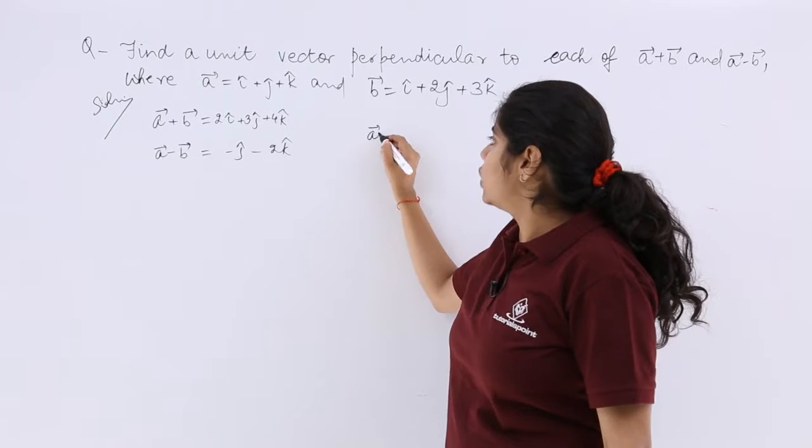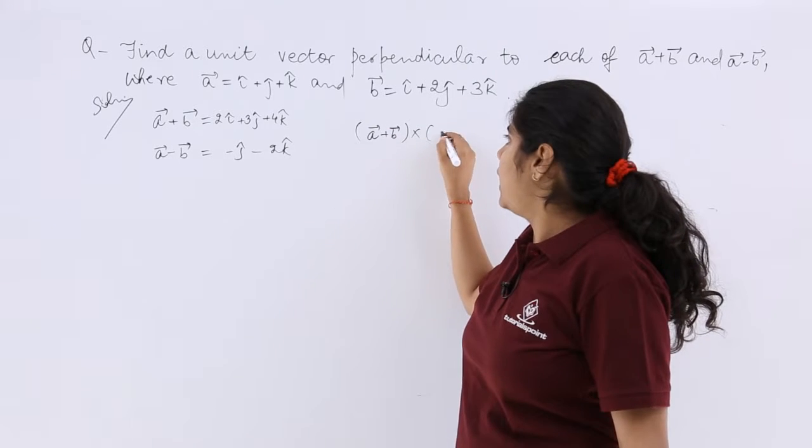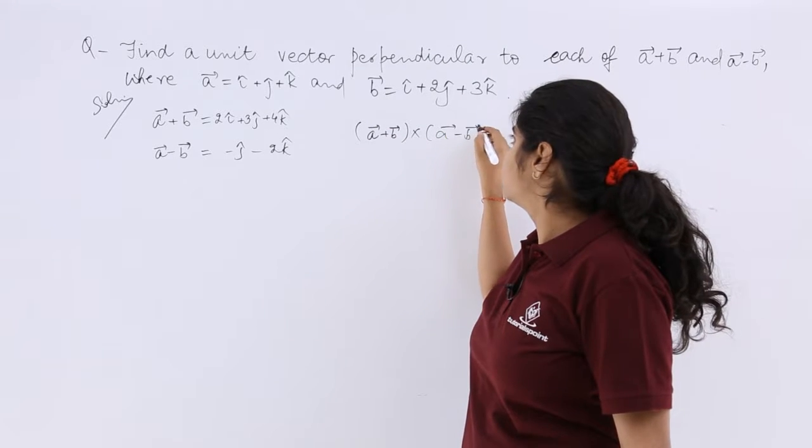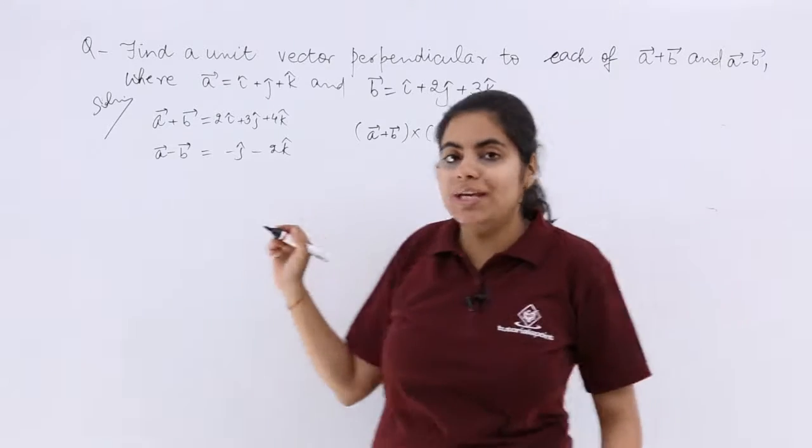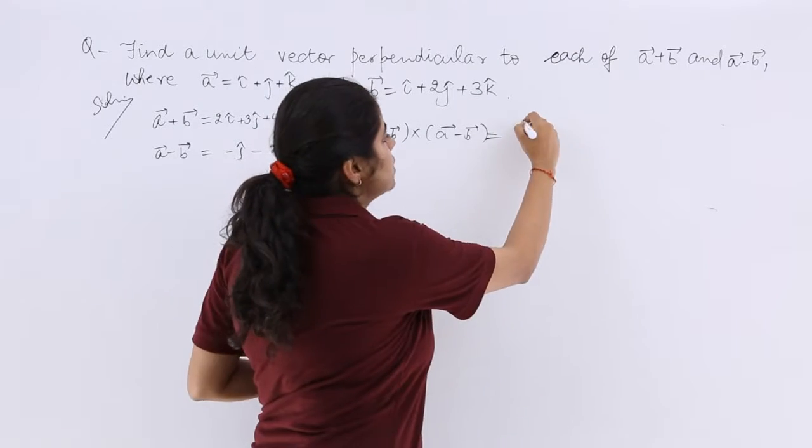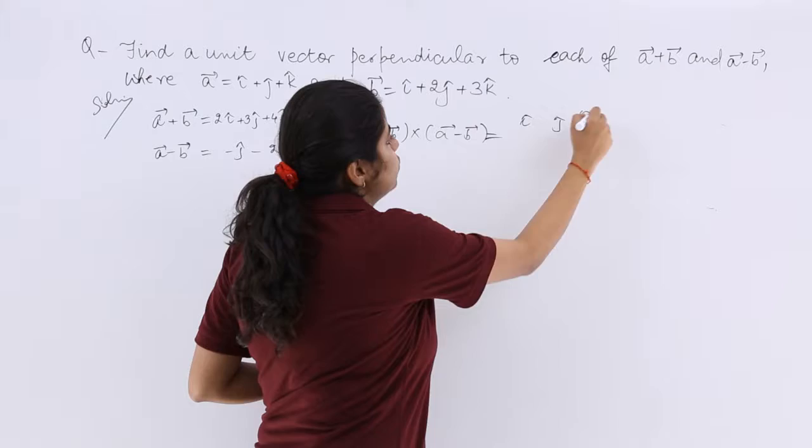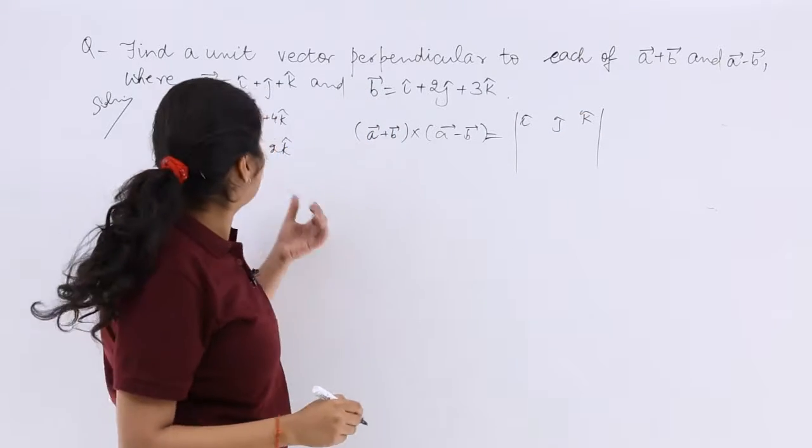So cross product of a plus b, a minus b. So i cap, j cap, k cap you write, because determinant method is easy for solution purpose. And see, the coefficients are what?